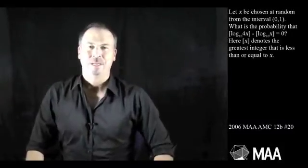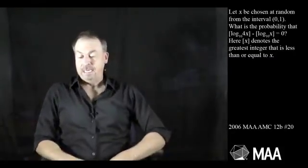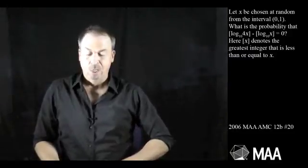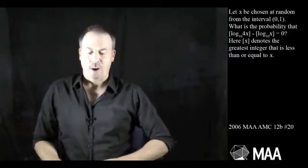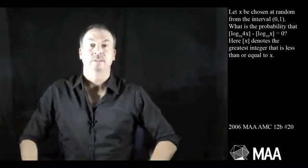G'day, welcome to another Curriculum Burst. Here's a curious question for high schoolers. It goes as follows: Let x be chosen at random from the interval (0,1). What is the probability that ⌊log₁₀(4x)⌋ - ⌊log₁₀(x)⌋ equals 0?